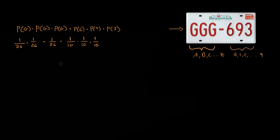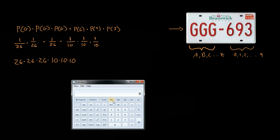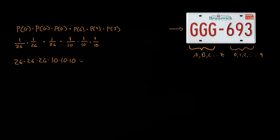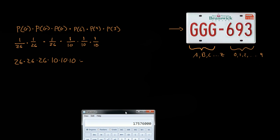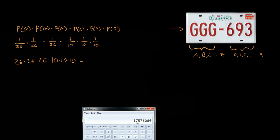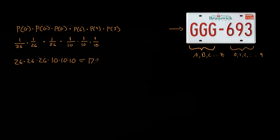There's actually a much simpler way of doing this. This is one plate we want out of all the possible different plates. We have 26 times 26 times 26 times 10 times 10 times 10, which gives us the total number of plates possible. So 26 × 26 × 26 × 10 × 10 × 10 equals — that's a really big number — that is equal to 17.5 million.